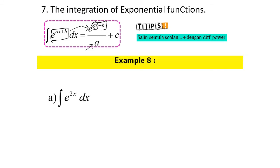Example 8, part A: the integration of e^(2x) dx is equal to — first, we copy e^(2x), and then divide by the differentiated power. The power is 2x; when we differentiate, we get 2. And then plus c. Simple.